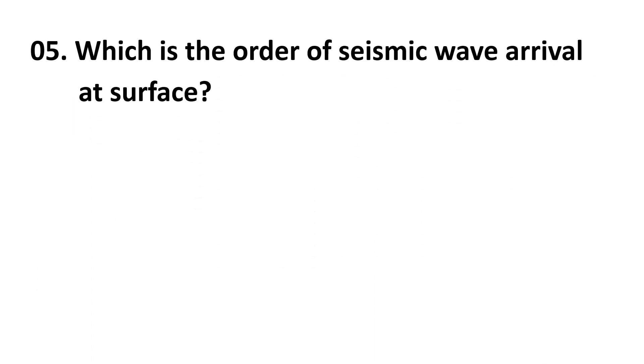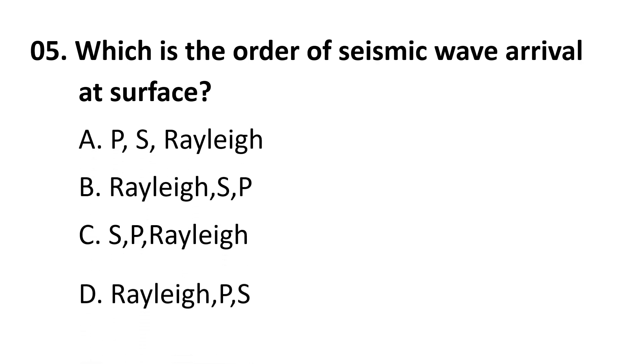Fifth question: which is the order of seismic wave arrival at surface? P S Rayleigh, Rayleigh S P, S P Rayleigh, Rayleigh P S. The correct answer is P wave, S wave, Rayleigh wave.